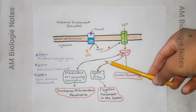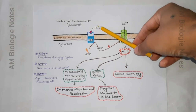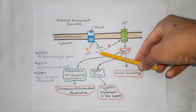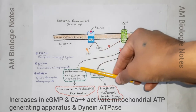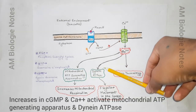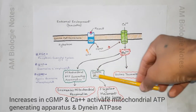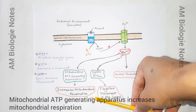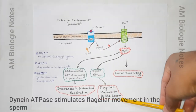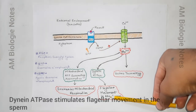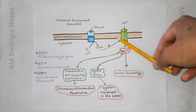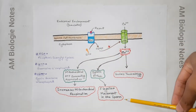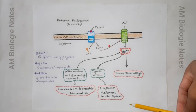In the same way, resact also acts as a species-specific sperm-activating peptide. The increases in cGMP and calcium activate the mitochondrial ATP-generating apparatus and the dynein ATPase. The mitochondrial apparatus helps to increase mitochondrial respiration, and the dynein ATPase stimulates flagellar movement in the sperm. In this way, upon meeting resact, Arbacia sperm are instructed where to go and are given the motive force to get there.